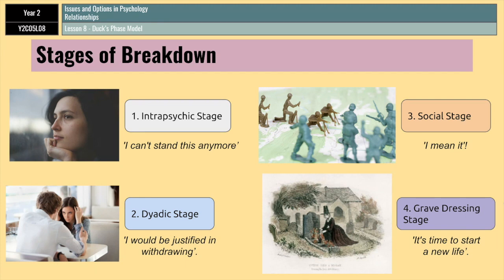Those are the four stages of relationship breakdown according to Duck. It's a very short outline — that is really all you need to know about Duck's Phase Model and how people go through a relationship breakup. The theory isn't perfect; there are a few things that are wrong with it and it's been modified several times since it was first published, but that's something we will go through in the evaluation section. For now, that is all you need to know about the outline of Duck's Phase Model.